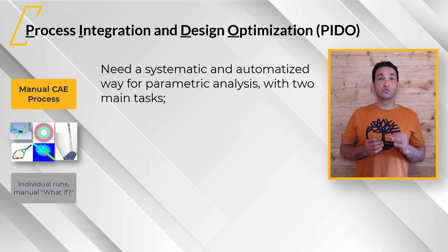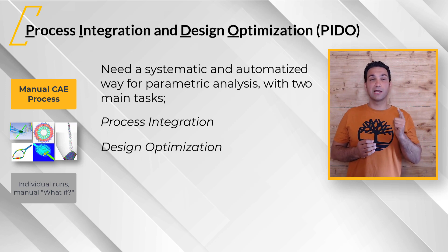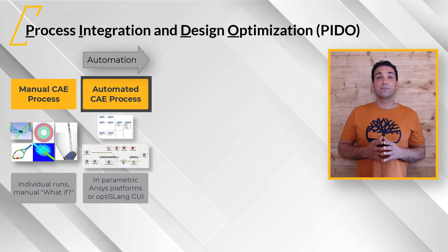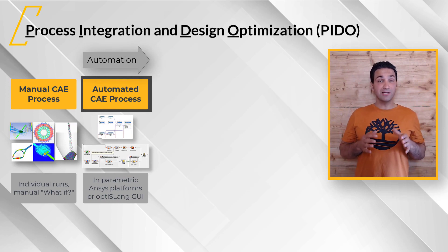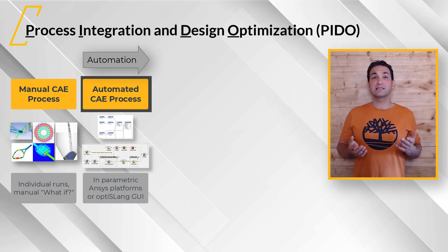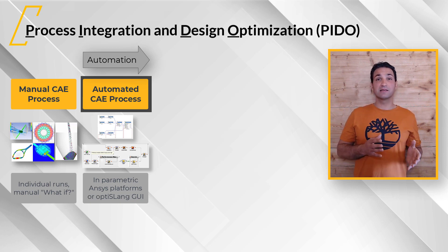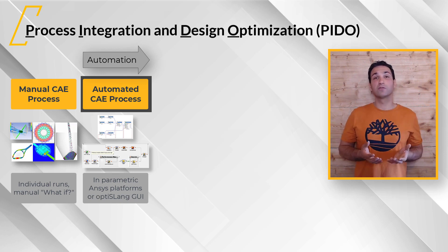We have two main tasks to conduct: process integration and design optimization, which we will discuss now. The next necessary step is to automate all manual steps, because in parametric optimization we want to analyze hundreds of designs. This has to be done automatically, and we call this process integration. It connects ANSYS, third-party, and in-house tools to automated simulation workflows.